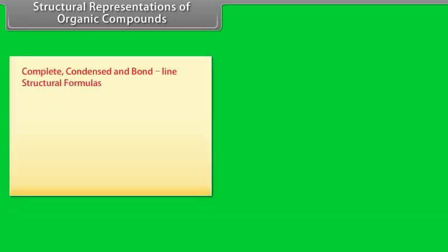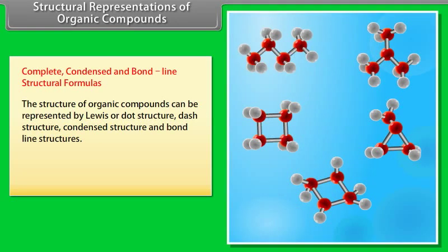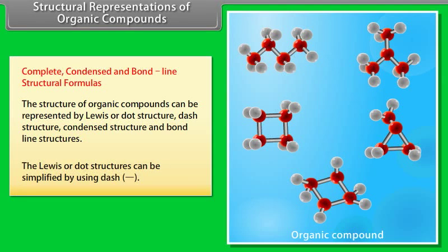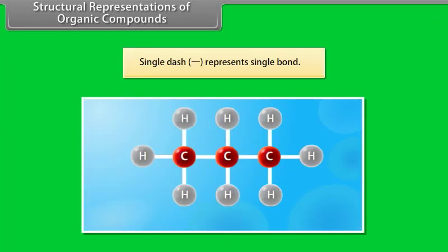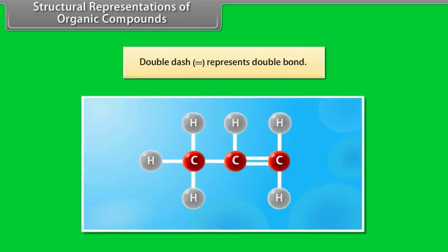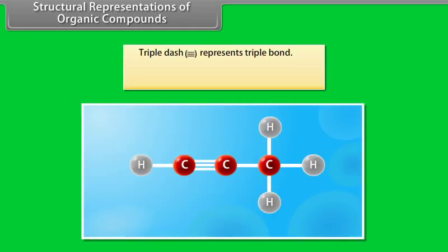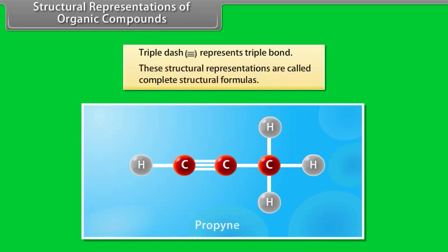The structure of organic compounds can be represented by Lewis or dot structure, dash structure, condensed structure, and bond-line structures. The Lewis or dot structures can be simplified by using dash notation: single dash represents single bond (e.g., propane), double dash represents double bond (e.g., propene), and triple dash represents triple bond. These structural representations are called complete structural formulas.